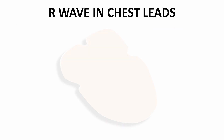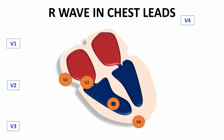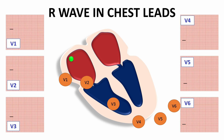We can see how the R wave appears in each chest lead. The chest lead locations are: V1 over the fourth intercostal space just to the right of the sternal border; V2 over the fourth intercostal space just to the left of the sternal border; V4 over the fifth intercostal space in the mid-clavicular line; V3 midway between V2 and V4; V5 over the anterior axillary line at the same level as V4; and V6 over the mid-axillary line at the same level as V4 and V5.